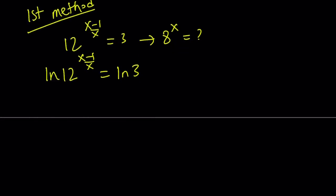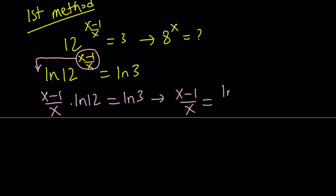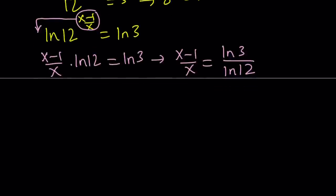Now one of the nicest things about logs is we have this power property. We can go ahead and move this to the front. And we can write this as x minus 1 over x times ln 12 equals ln 3. Great. So this gives us an equation in x because ln 12 and ln 3 are constants. We can go ahead and solve for x. Let's divide both sides by ln 12 first.